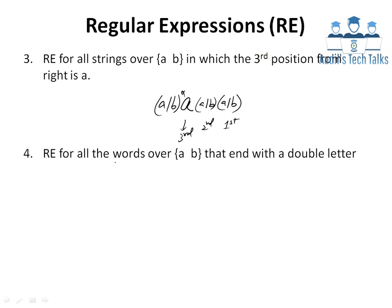Example 4: Regular expression for all words over {A, B} that end with a double letter. A double letter at the end would be AA or BB, represented as (AA | BB). Before these, there is a possibility of having nothing, or any general combination of A's and B's. So we place (A|B)* before (AA | BB).